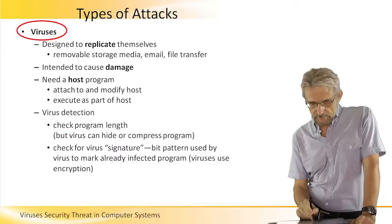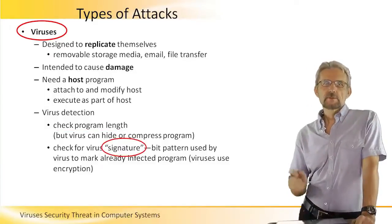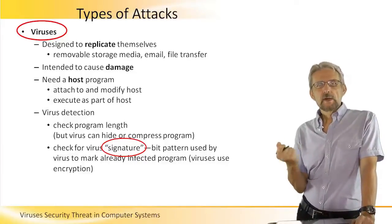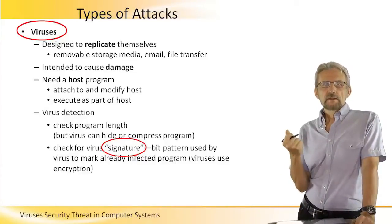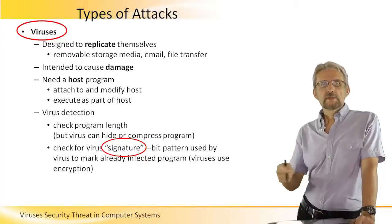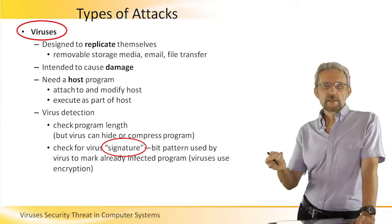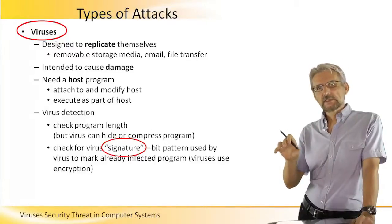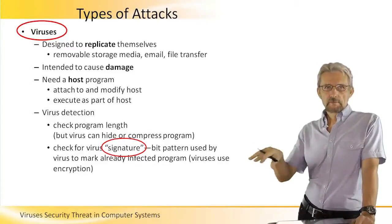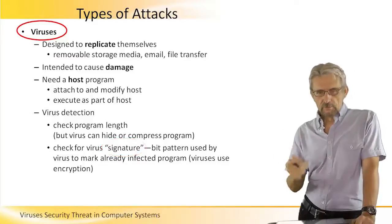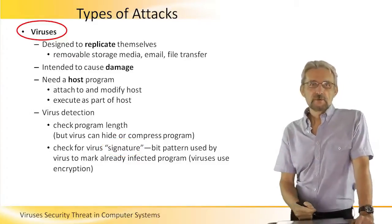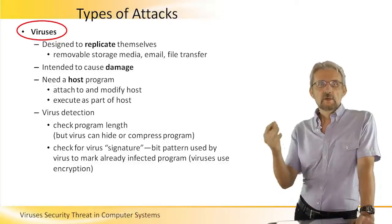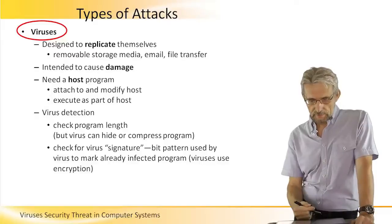However, every virus has something called a signature — a bit pattern that identifies this particular virus. It needs it to identify itself so it doesn't reinfect the same program over and over again, so the virus needs to detect its own kind. For detection of a virus, we can use the same technique: if we know what the signature is, we can check for it and eliminate it.